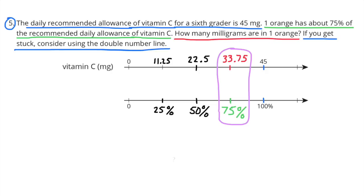Number 5. The daily recommended allowance of vitamin C for a 6th grader is 45 milligrams. One orange has about 75% of the recommended daily allowance of vitamin C. How many milligrams are in one orange? If you get stuck, consider using the double number line.